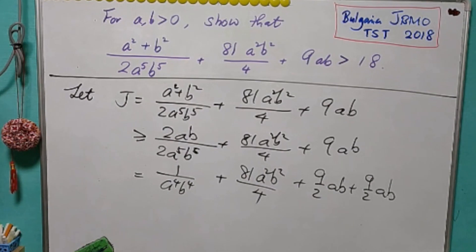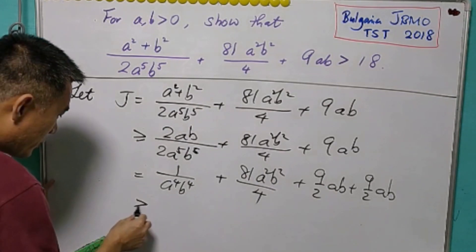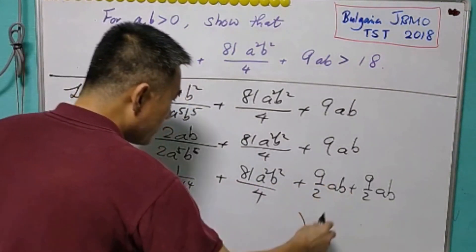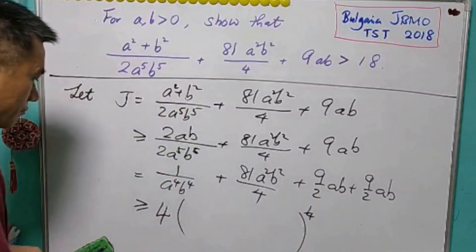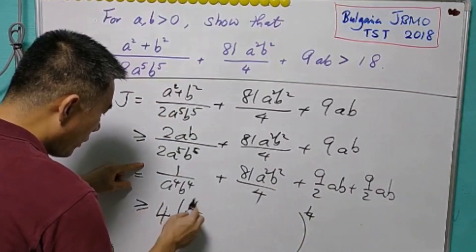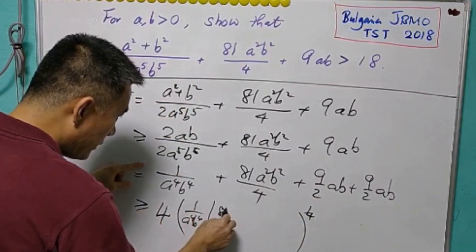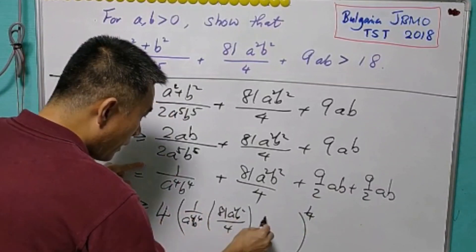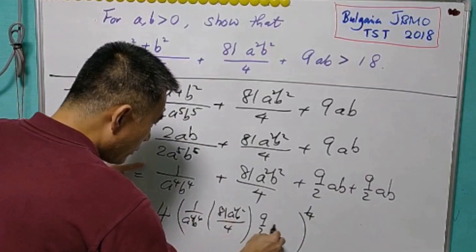With this, we use AM-GM inequality again in 4 terms. So this will be greater than or equal to 4 times the product of all these to the power of 1/4. And this will be equal to 1 over a⁴b⁴, 81a²b² to the power of 1/4, and 9 over 2ab squared.